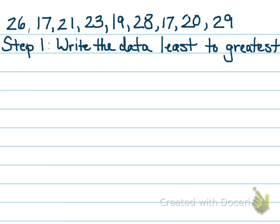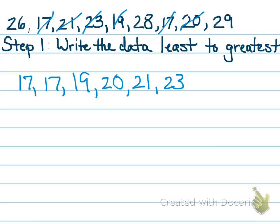The first thing we're going to do is write our data in order from least to greatest. So let's do that very quickly. I can see my lowest number is 17, then another 17, 19, 20, 21, 23, 26, 28, and 29. So first step, write the data from least to greatest. We've got that step covered. Let's go on to step two.